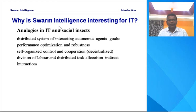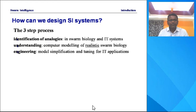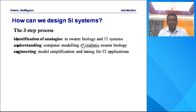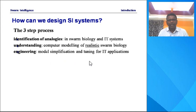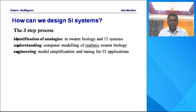So Swarm Intelligence — how they are interesting for the IT industry, that is the answer. And then how can we design the Swarm Intelligence system? There is a three-step process. First one is the identification of analogy in Swarm Biology and IT systems. Then understanding — computer modeling of realistic Swarm Biology. Then engineering models, simplification, and tuning for IT applications. These are the three stages for developing Swarm Intelligence systems.